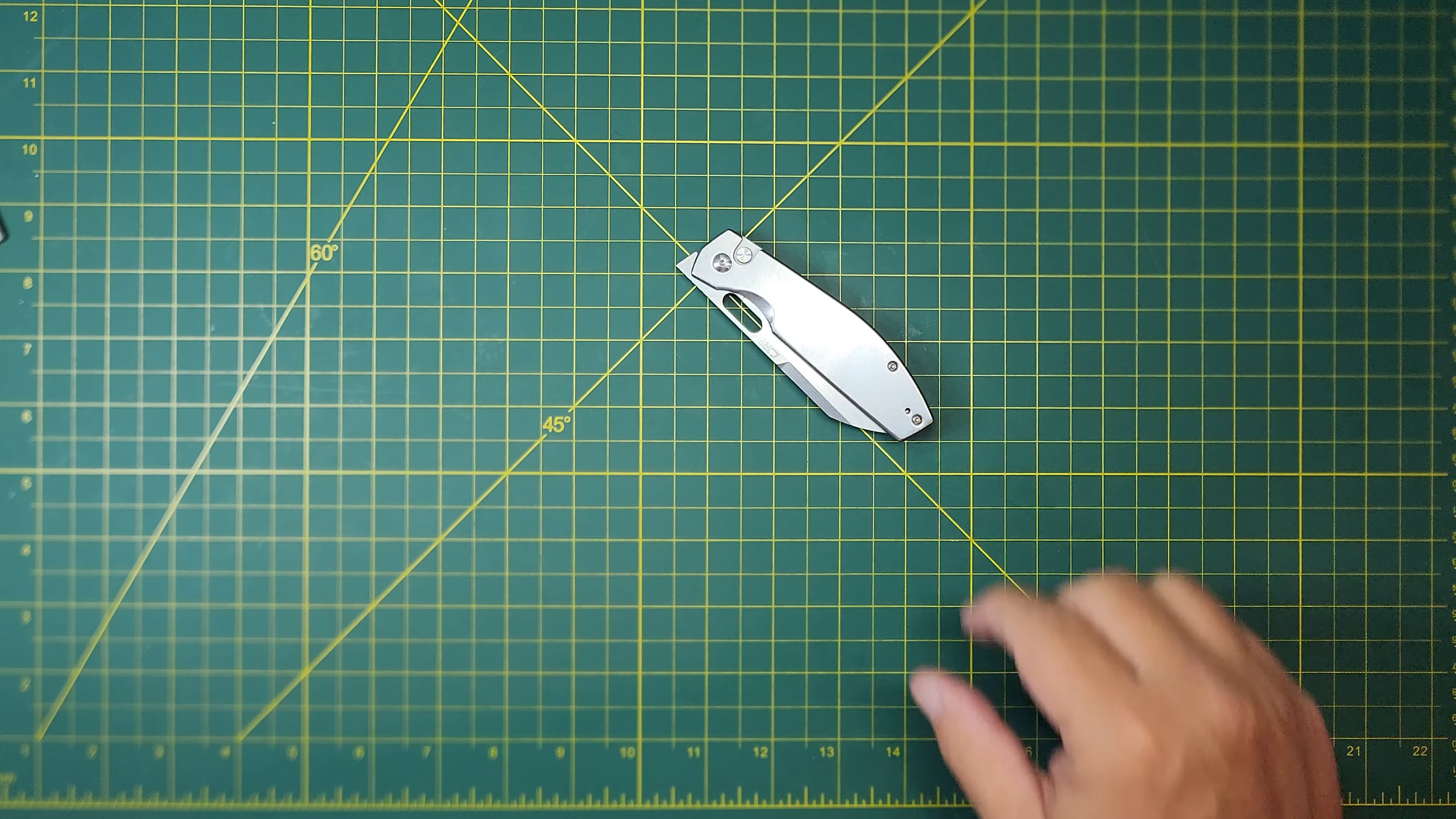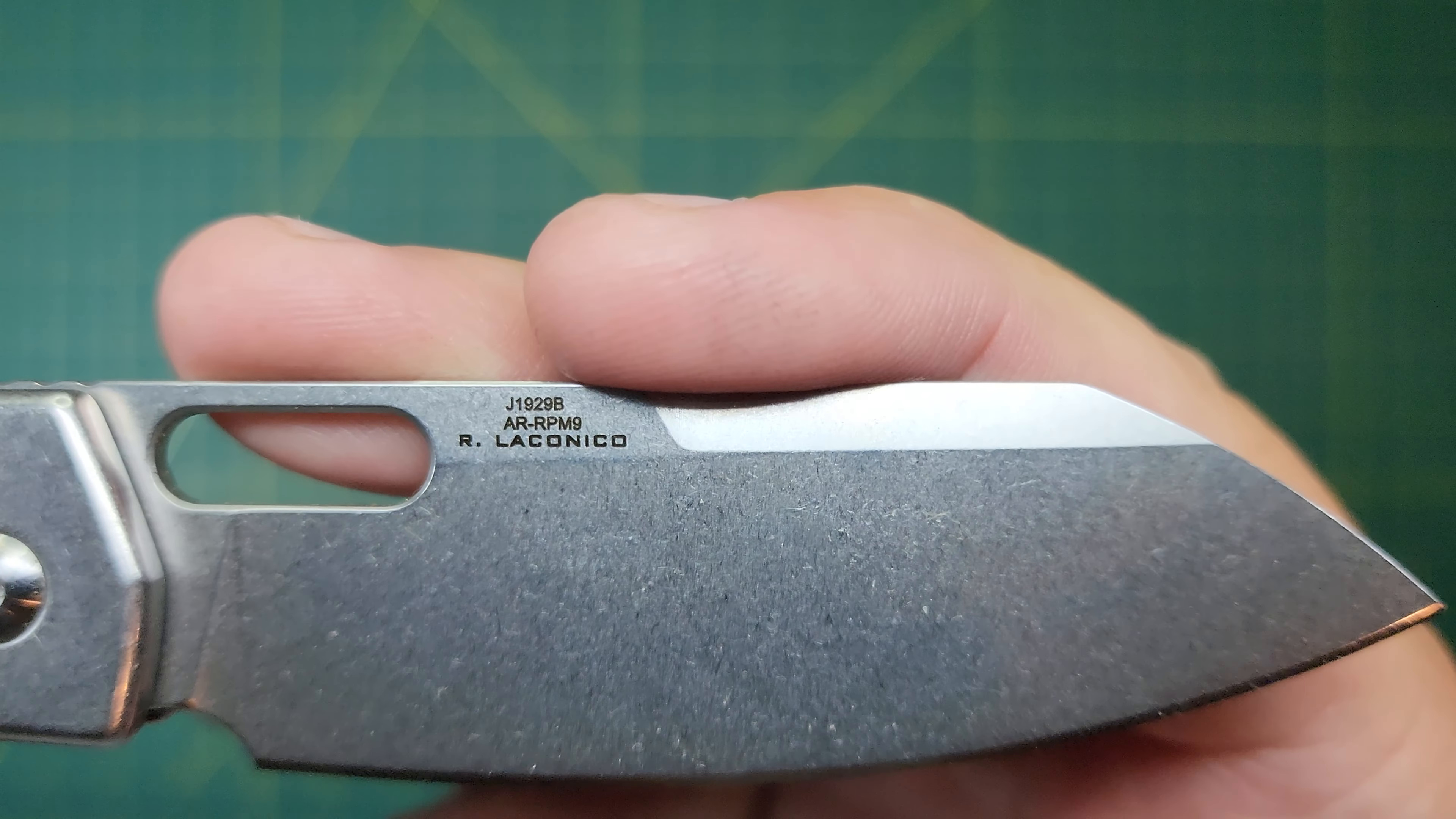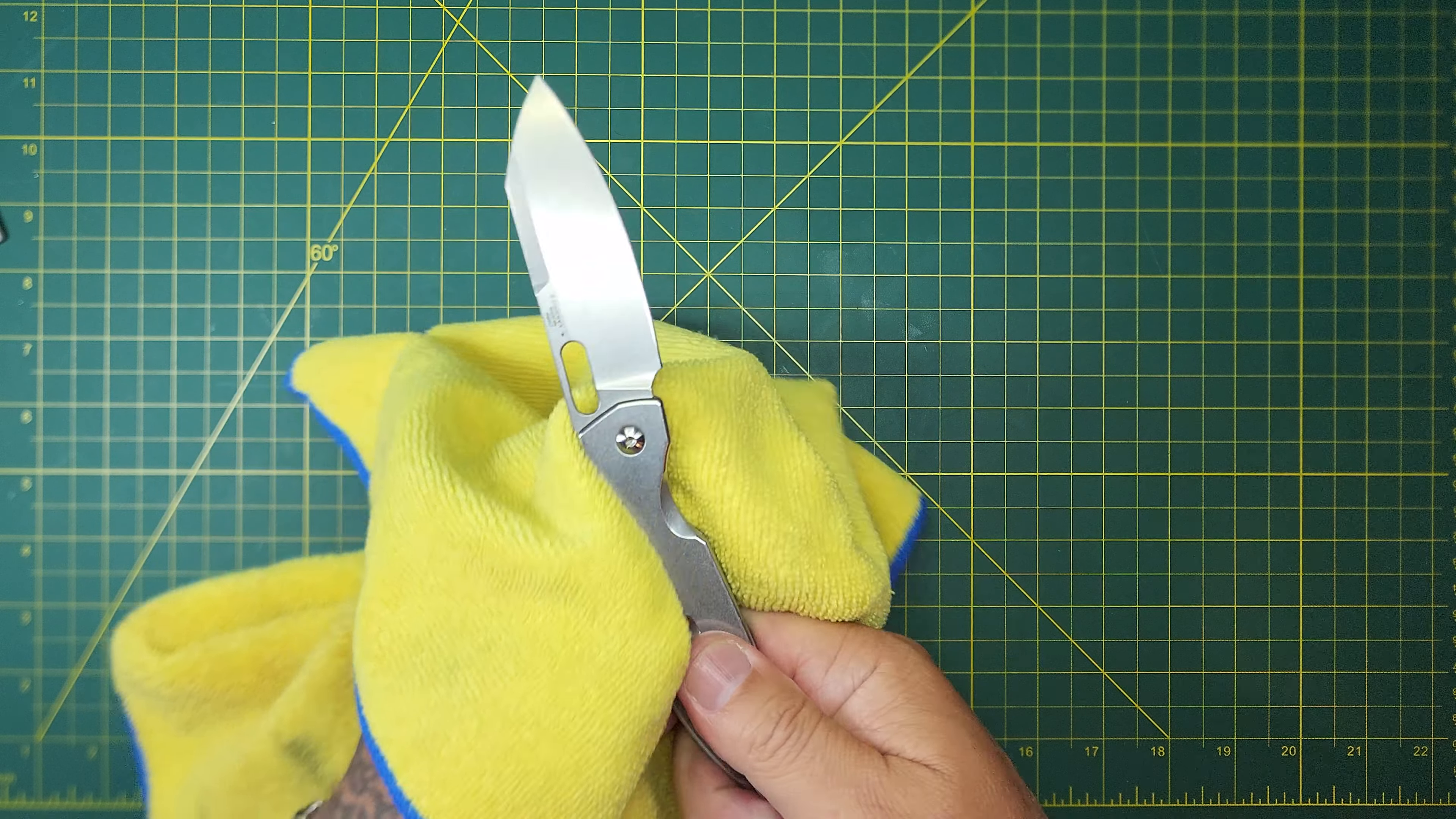So, got a CJRB Echo, and of course, the designer there, Laconico. It's in AR RPM9 steel, so there's plenty of talk about that AR steel and how it's comparable to D2.